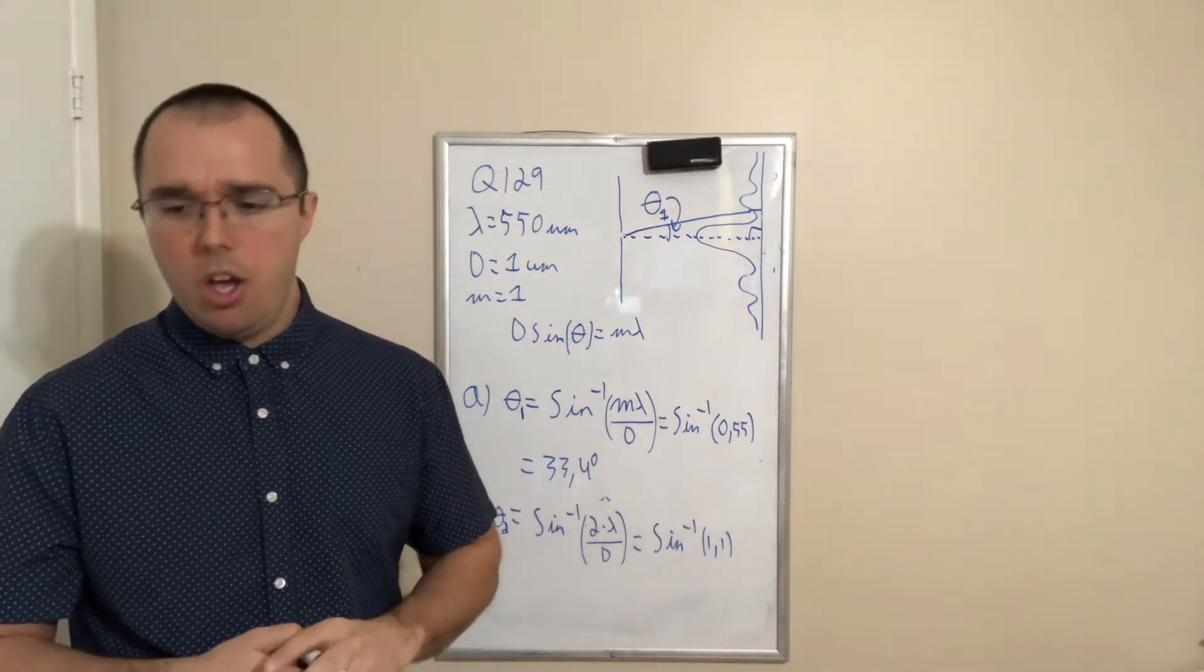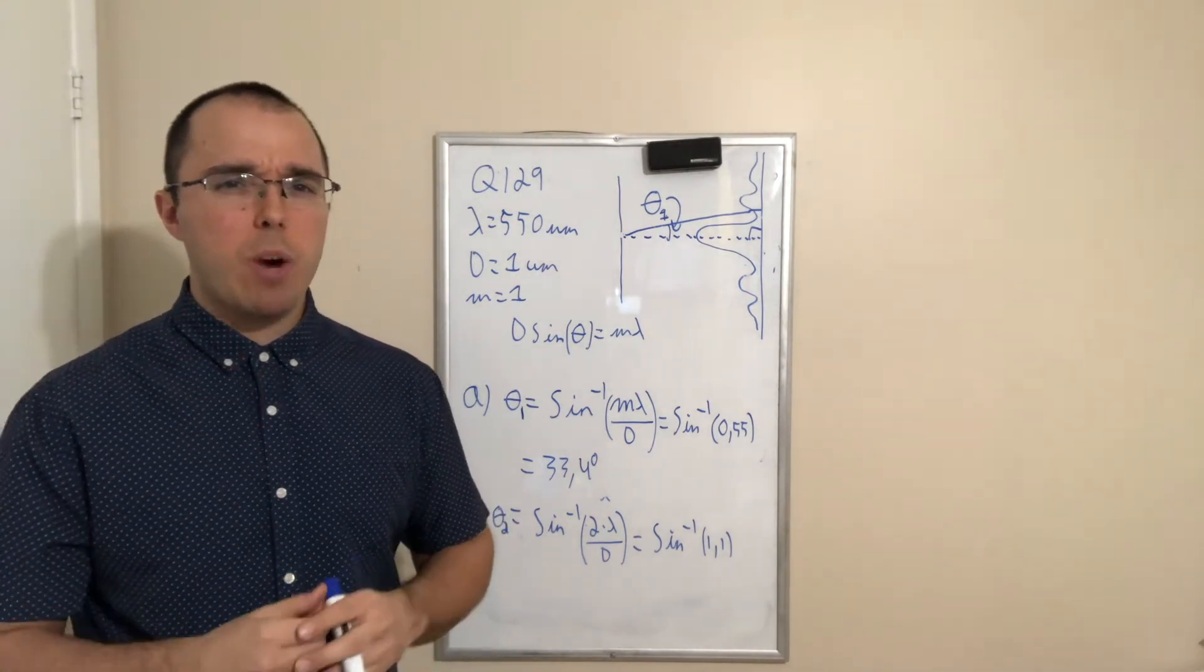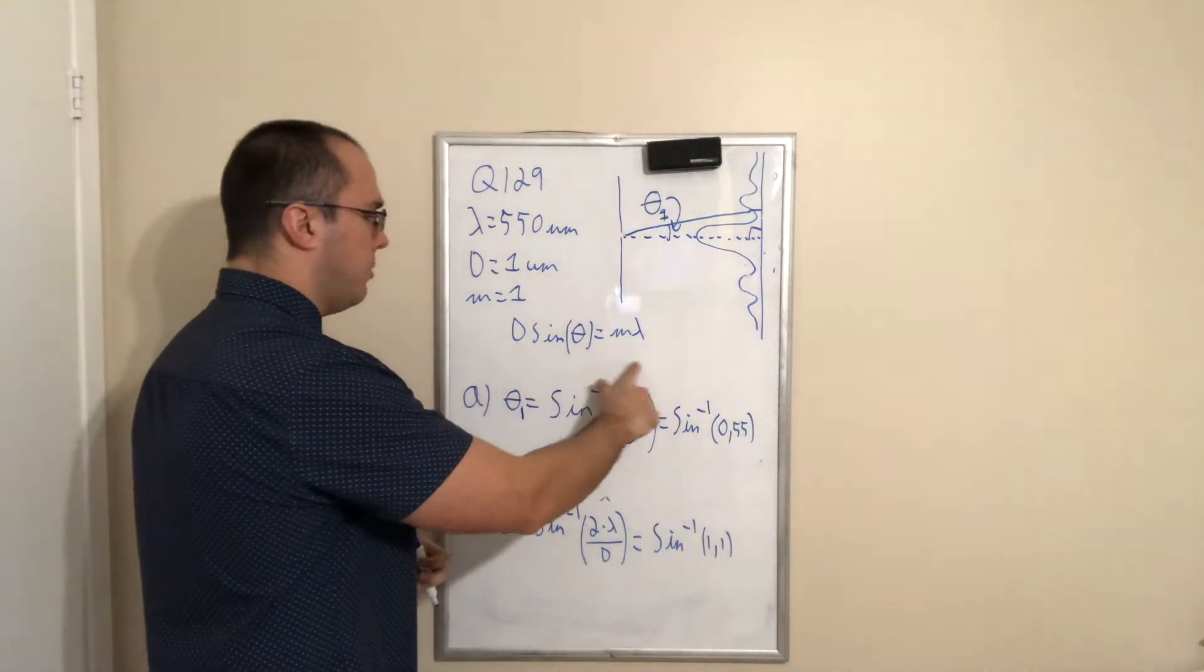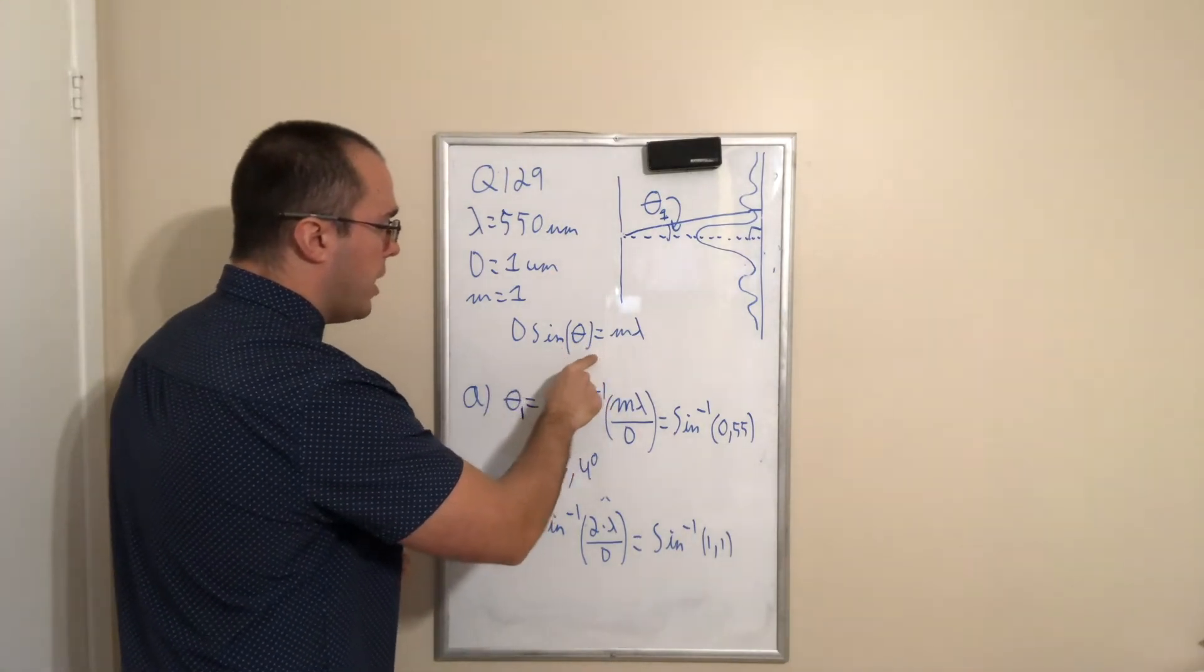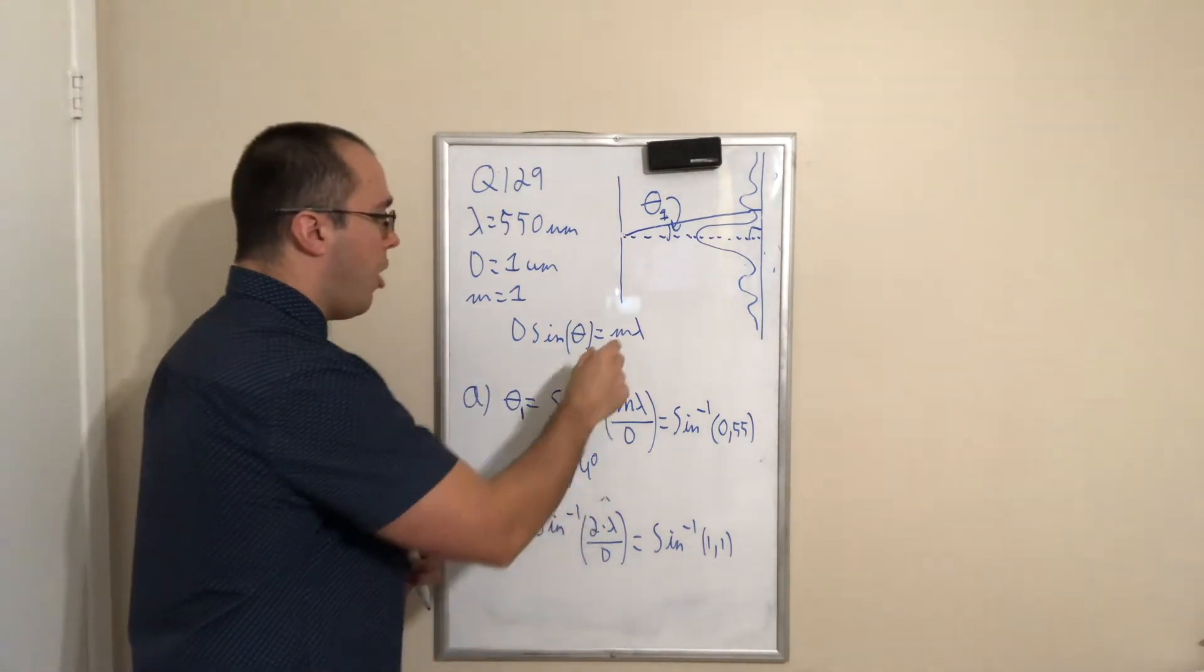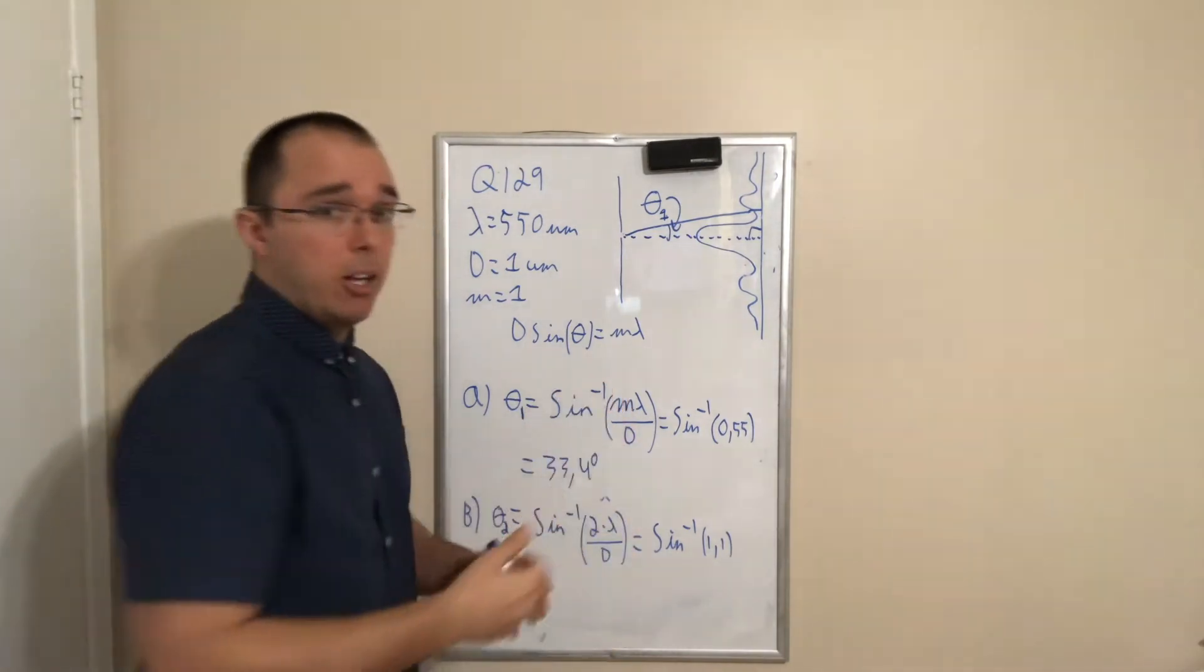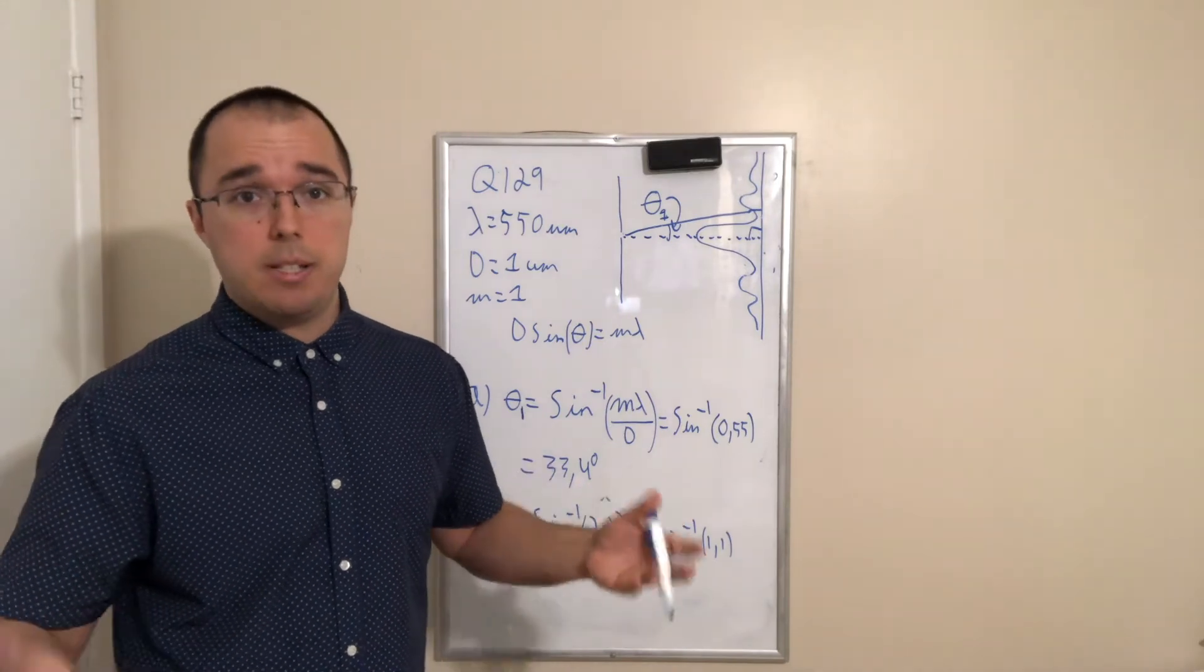In part B, will there be a second minimum? We solved a similar question in chapter 6, and in chapter 6, what I did when I was solving this example is I took this formula, I looked at what happened if we change the angle to 90 degrees, how many minimums will we be able to see? We could use that method, and if we find that m is bigger than 2, that means there are at least 2 minimums, and therefore, yes, we will see a second minimum.